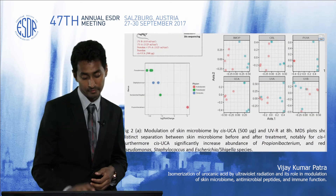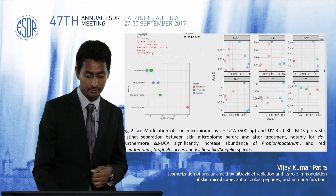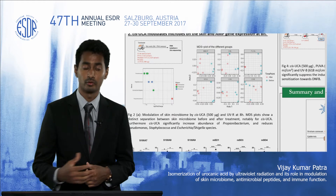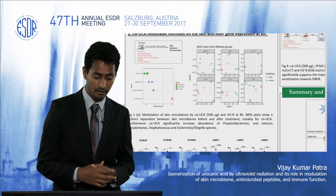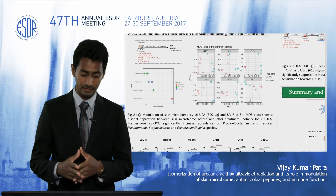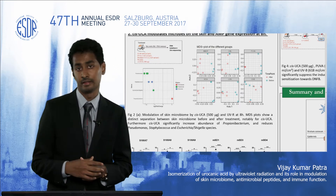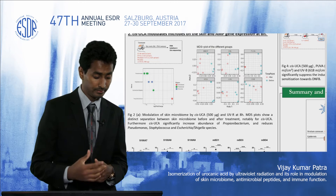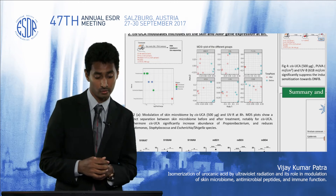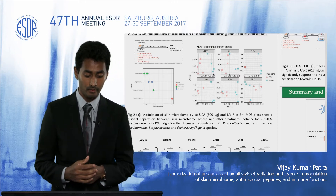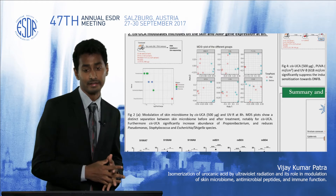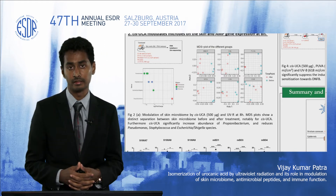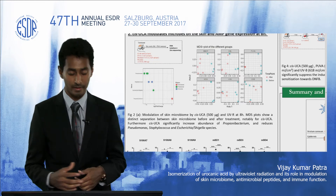The first results were very interesting. We found that at eight hours, application of urocanic acid on the dorsal skin modulated bacteria such as Propionibacterium — there was an increase in its abundance — whereas species such as Pseudomonas, Staphylococcus, and E. coli were significantly reduced. This gives the first indication that urocanic acid is modulating the skin microbiome.